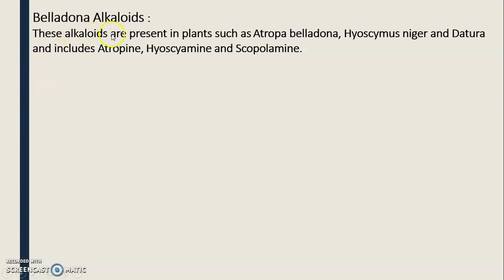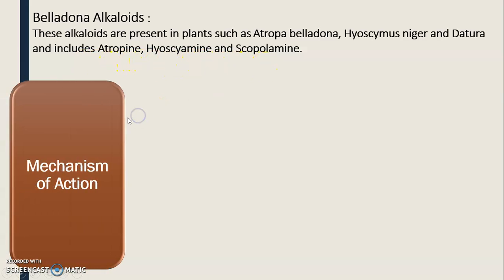Among these, we see the belladona alkaloids. These alkaloids are present in plants such as Atropa belladona, Hyoscyamus niger, and Datura, and include atropine, hyoscyamine, and scopolamine.